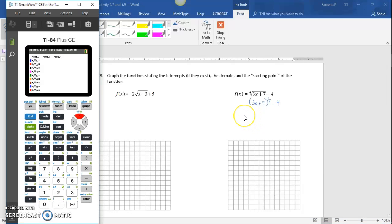In y equals, type parentheses 3x plus 7, raised to 1 divided by 4. If you have a TI-84, you can enter it as shown. If you have a TI-83, you'll need parentheses around the 1/4th, then use the right arrow key to get back to the expression level, then minus 4. That's how you type it into your calculator.